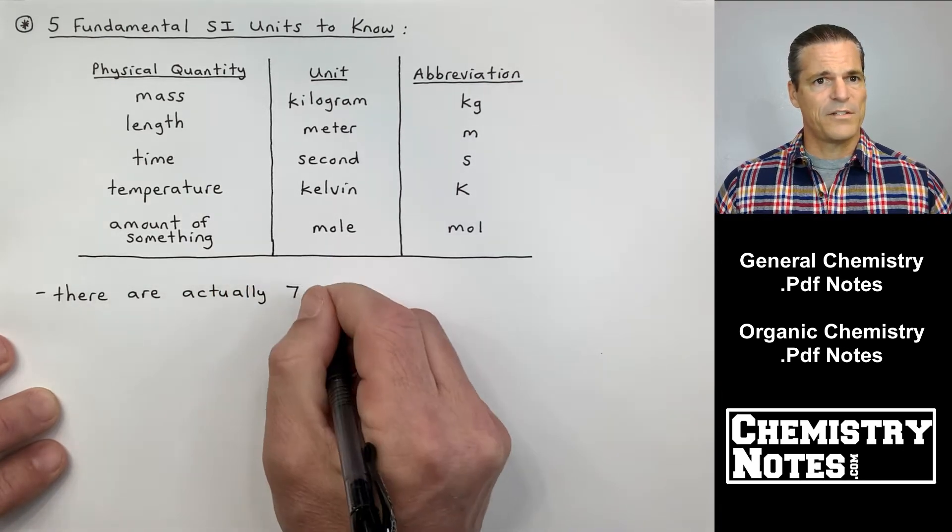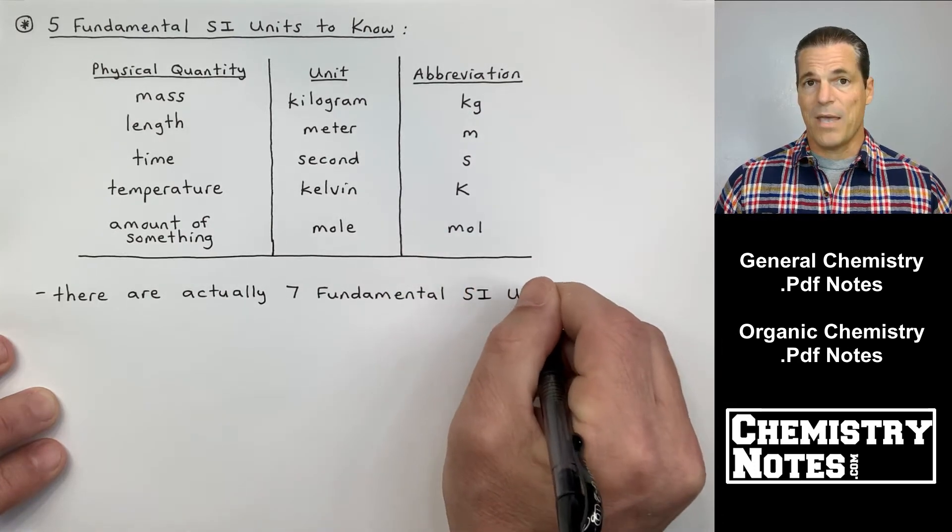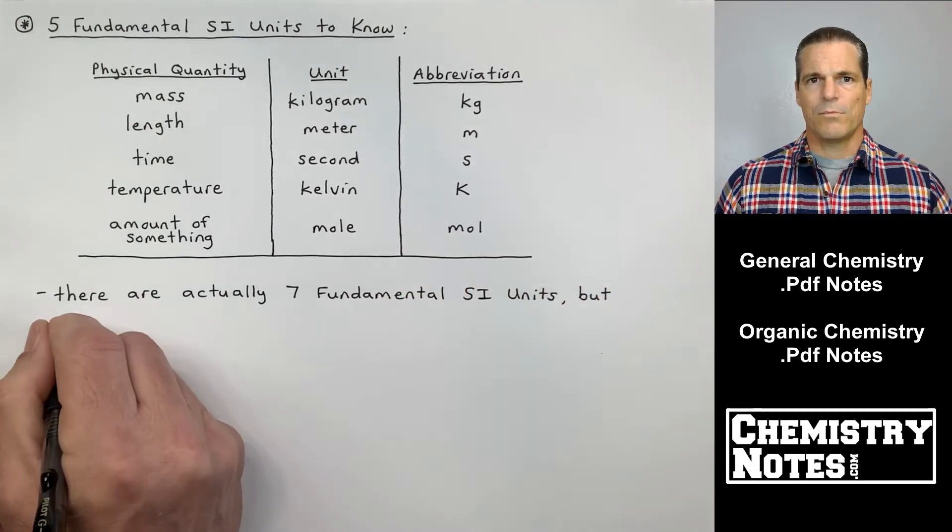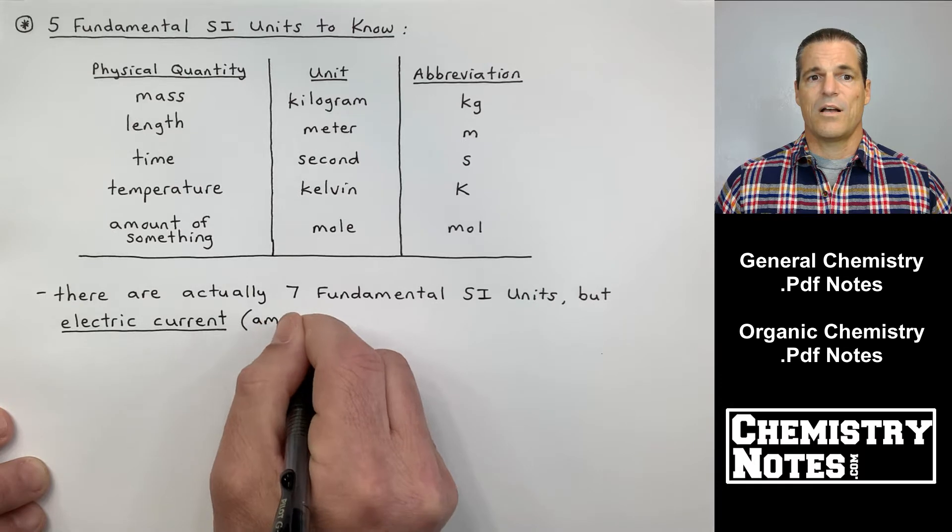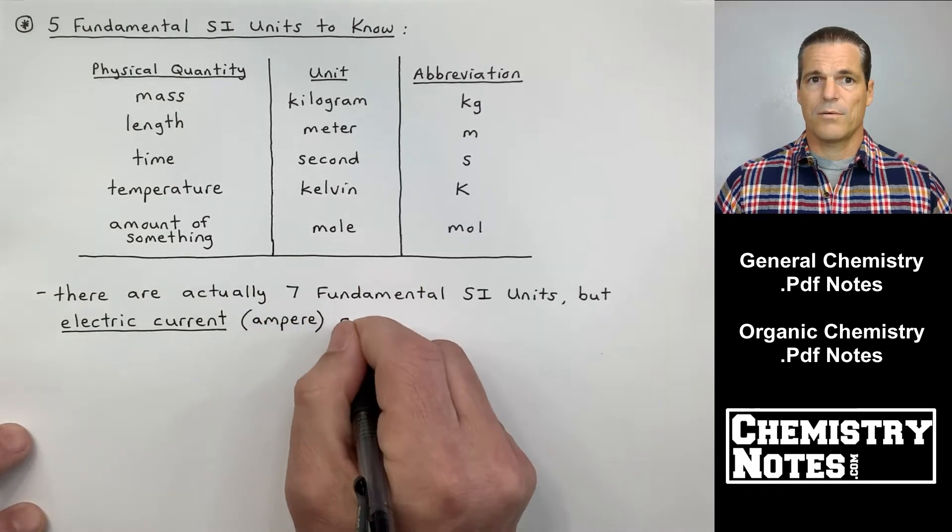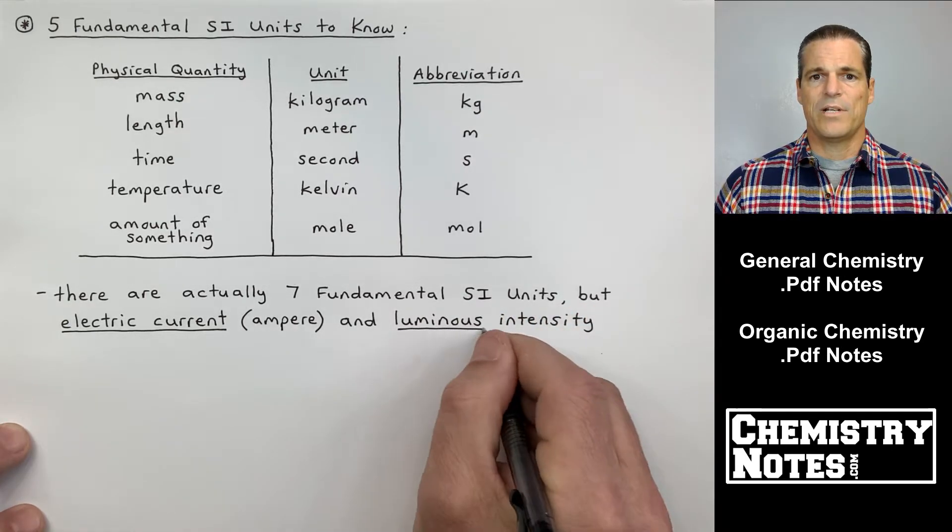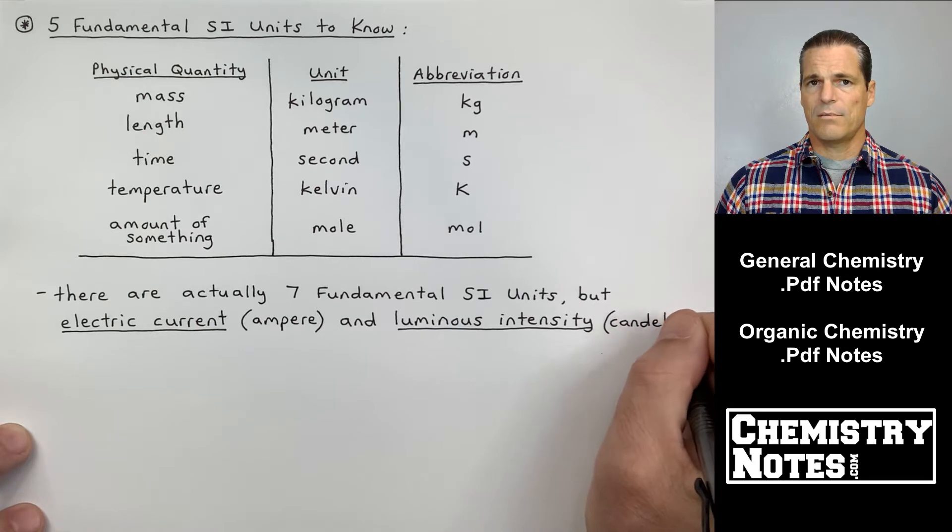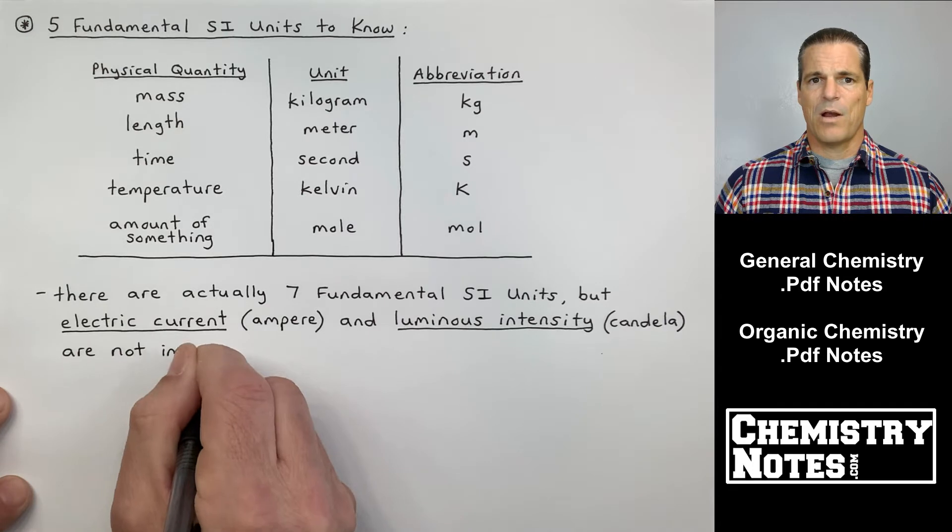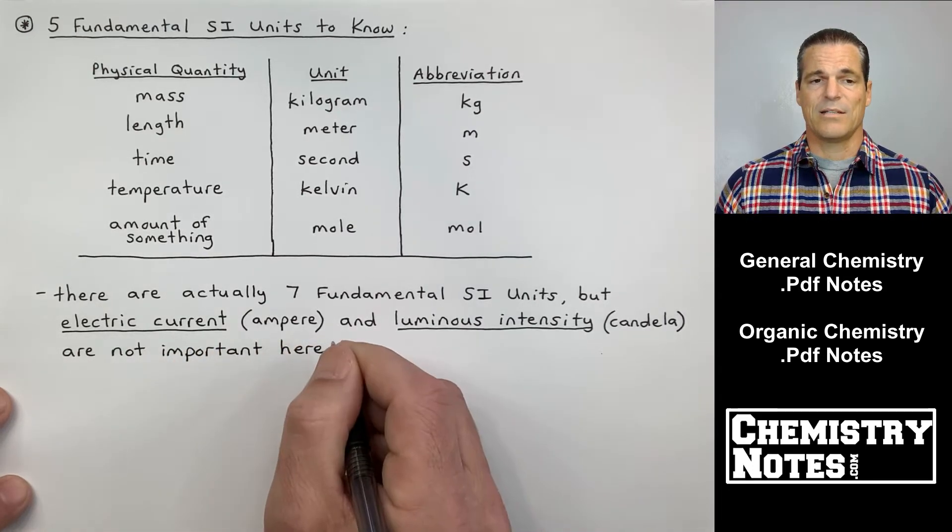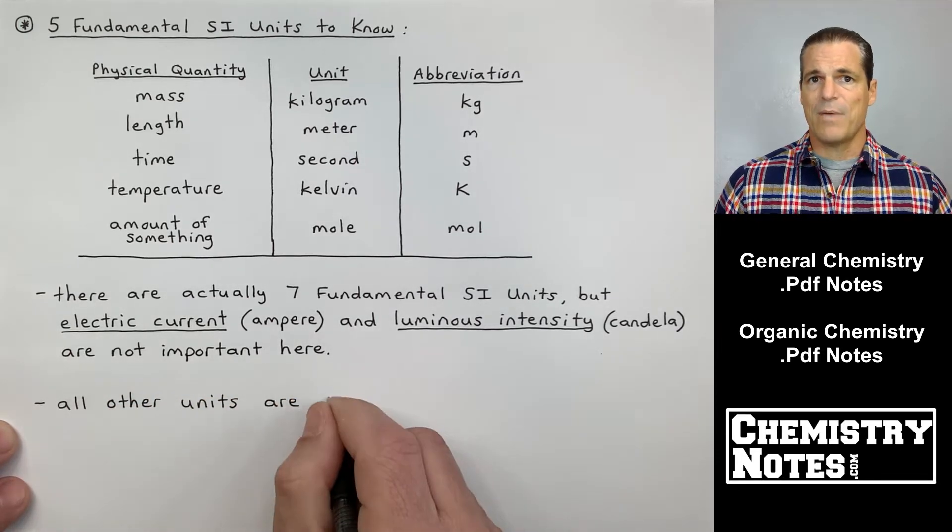I didn't say that's all the fundamental SI units. There's actually seven. So there's actually seven SI base units or fundamental units. But the other two, we don't use very much in general chemistry. So we can ignore those. Those are the electric current with the unit of ampere and luminous intensity that has a unit of candela. We will use electric current, the amp, in section 17, electrochemistry, but very sparingly. And we would never use luminous intensity candela. So you got your five fundamental SI units up there.